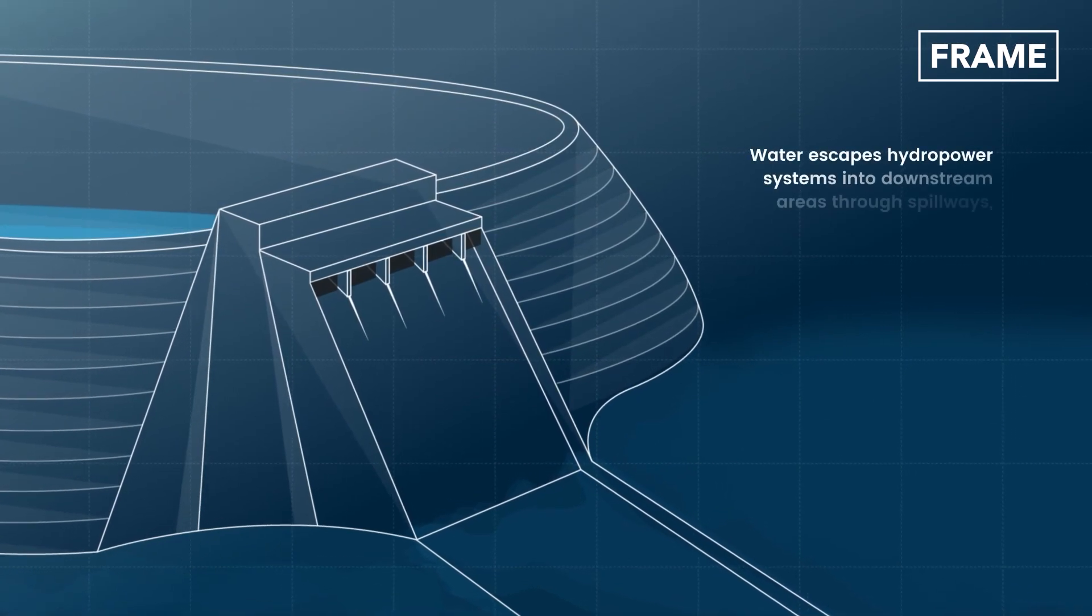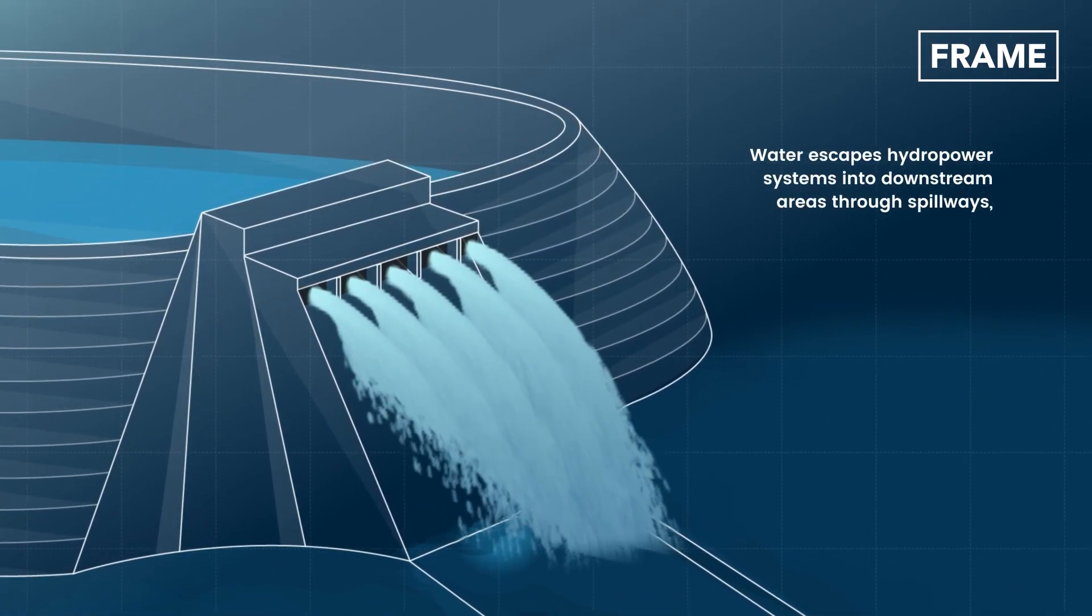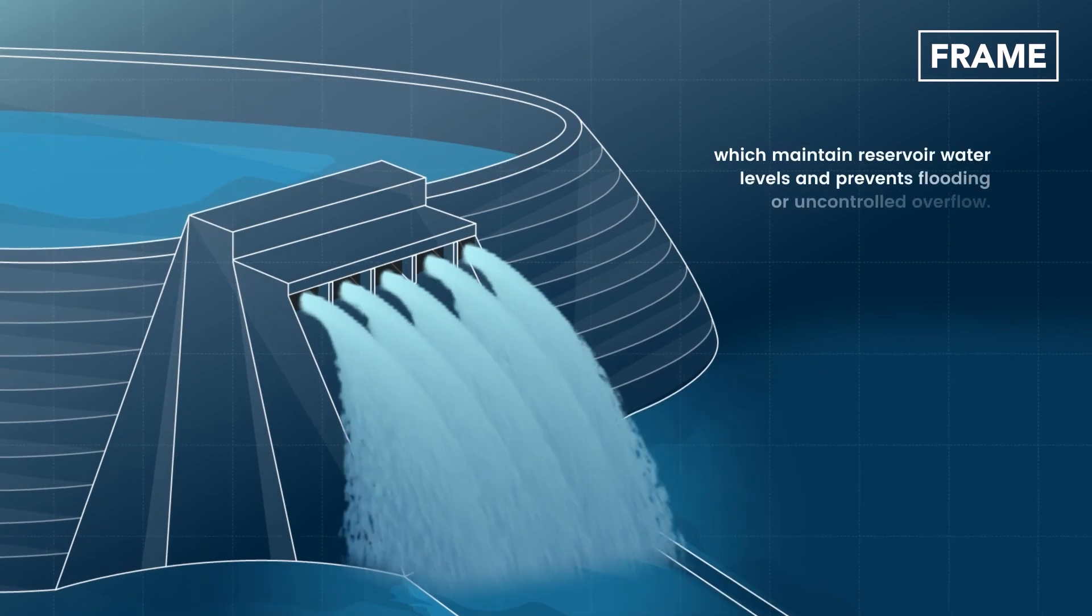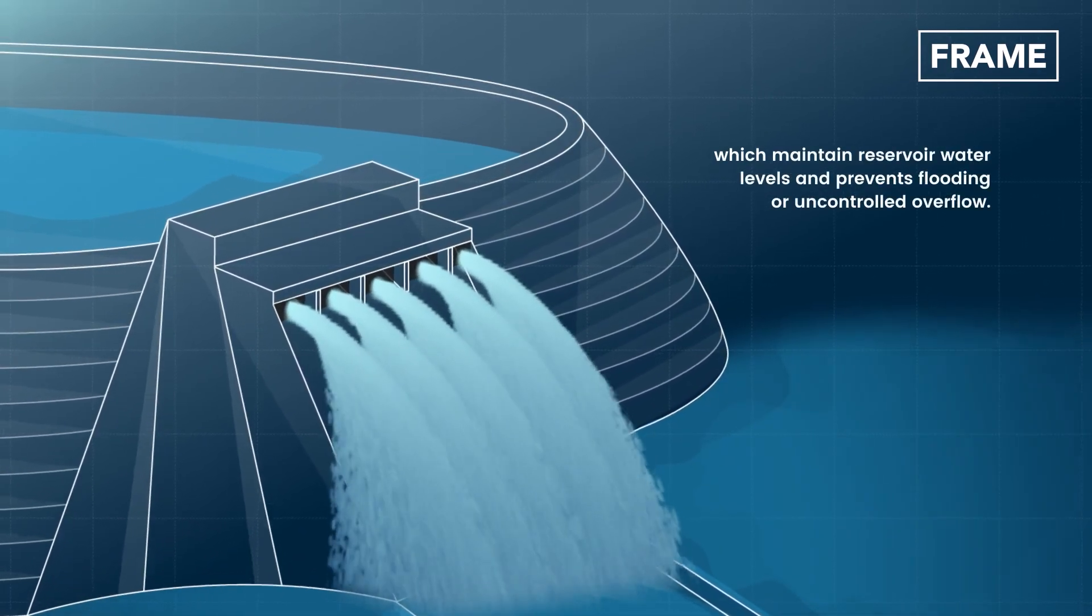Water escapes hydropower systems into downstream areas through spillways. The spillway maintains reservoir water levels and prevents flooding or uncontrolled overflow.